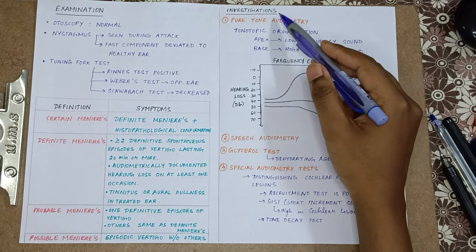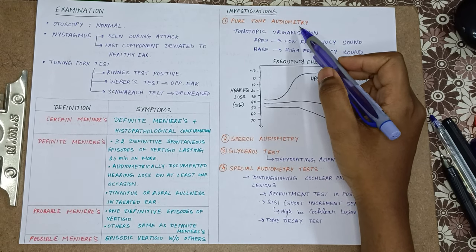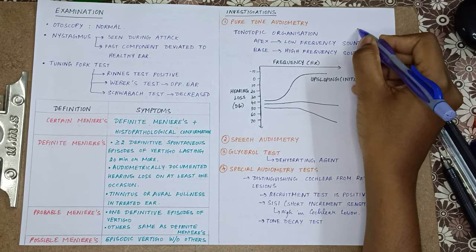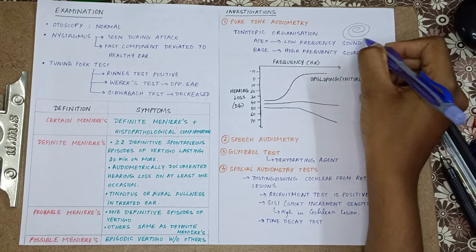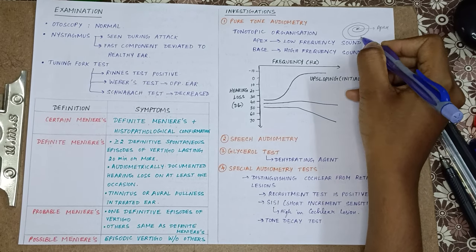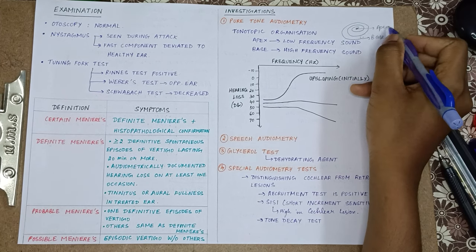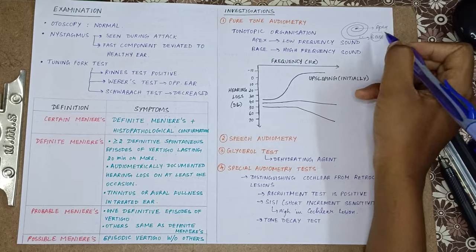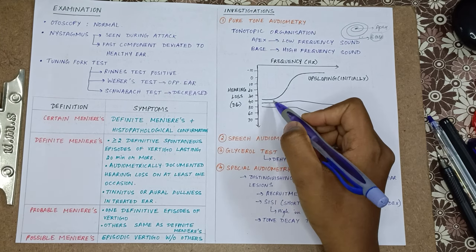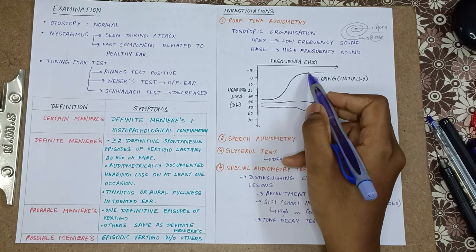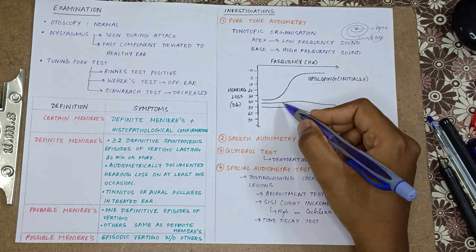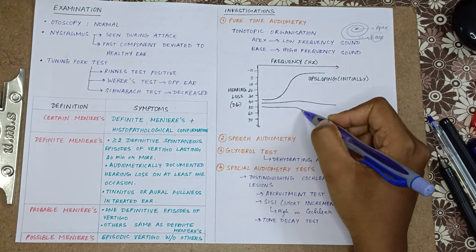Now the investigations of Meniere's disease. First, pure tone audiometry — it has the concept of tonotopic organization. The cochlea has an apex and a base. In Meniere's disease, the apex is affected first. The apex is responsible for low frequency sounds and the base for high frequency sounds. So initially low frequency sounds are affected, and you get an up-sloping audiogram. As the disease progresses, there is flattening then dipping of the graph.